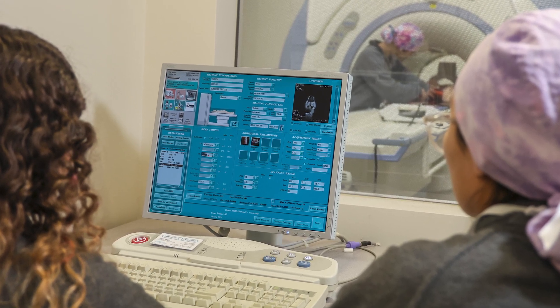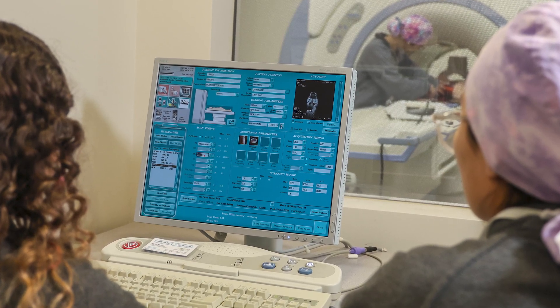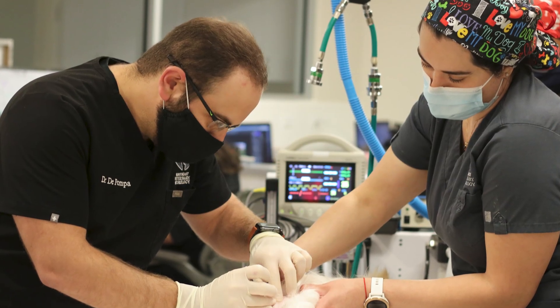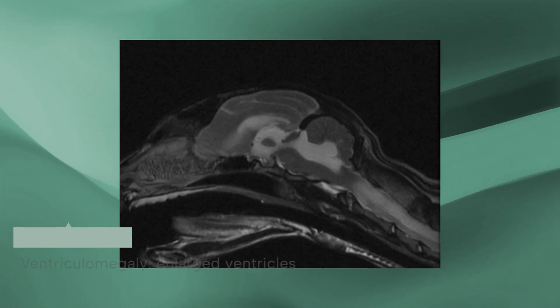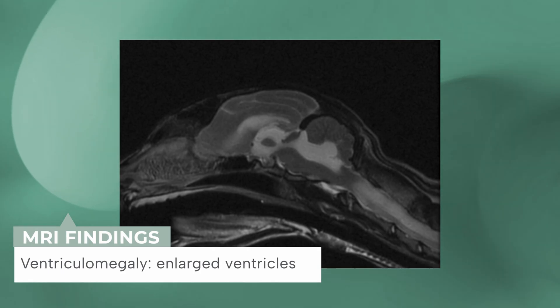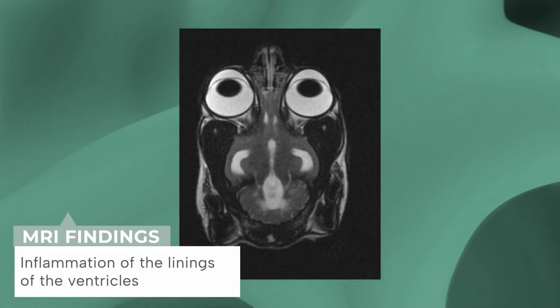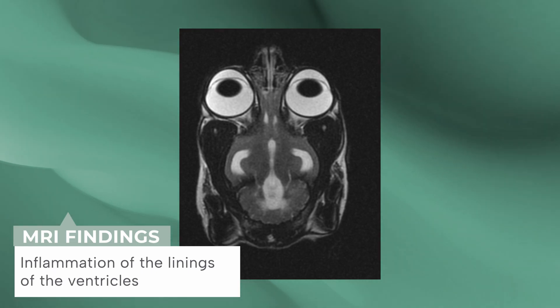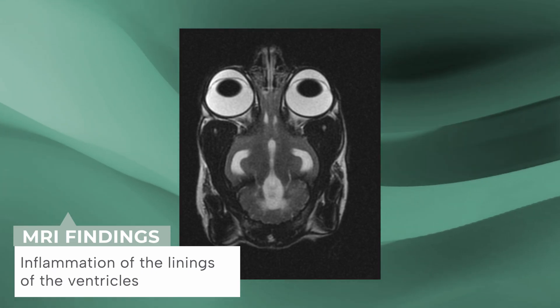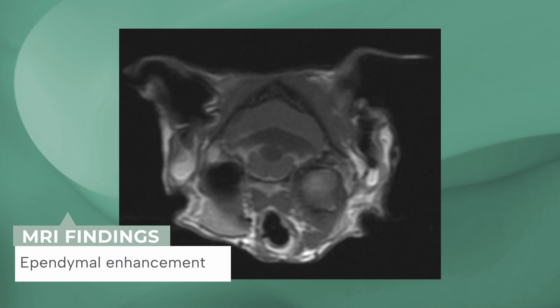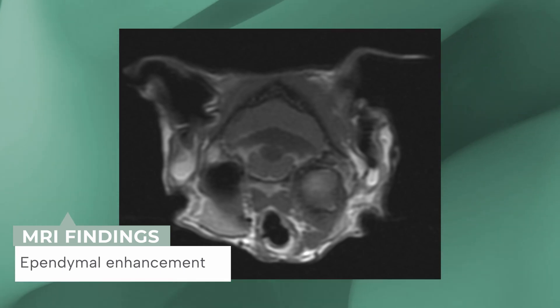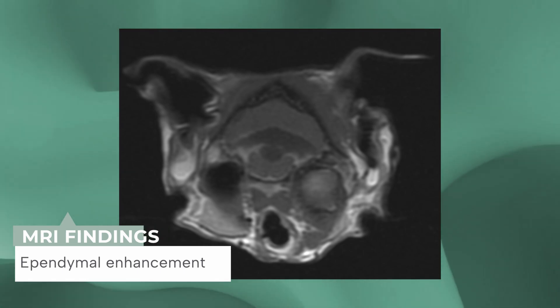In neurology, one of the tests that we use is an MRI scan and a spinal fluid analysis. There are pretty specific findings on an MRI that can indicate FIP, at least sometimes to the best of our ability. Some of the things we'll see on an MRI are really enlarged ventricles — the fluid reservoirs that hold the spinal fluid in the brain — inflammation of the linings of those ventricles, called the ependyma, and sometimes contrast enhancement of the ependyma as well.